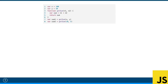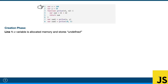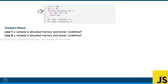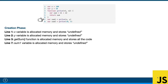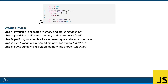During the creation phase, it goes through the entire script and puts everything into memory. On line one it sees a variable x — it allocates memory in the heap and stores it as undefined. Next it looks at y and stores that as undefined too. Line three is a function, so the entire function gets stored. Then on line seven, sum1 gets allocated and stored as undefined, and same for sum2. That's the entire creation phase.